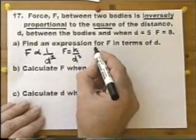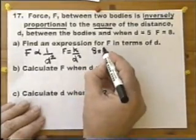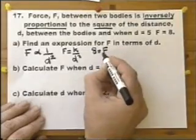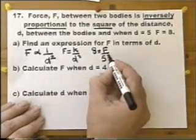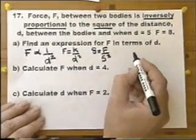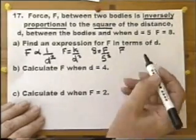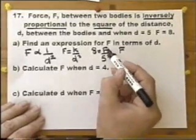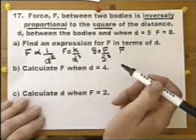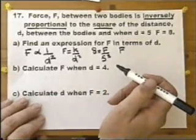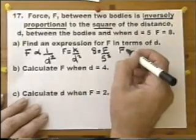So let's put F equals 8, and D equals 5, which of course gives us D squared equals 25. If that's the case, then K itself must be 8 multiplied by 5 squared — 8 multiplied by 25 — which is 200.